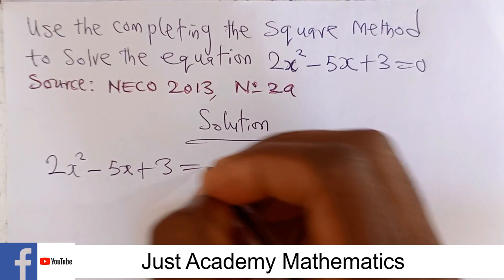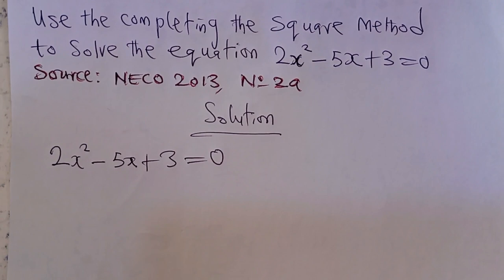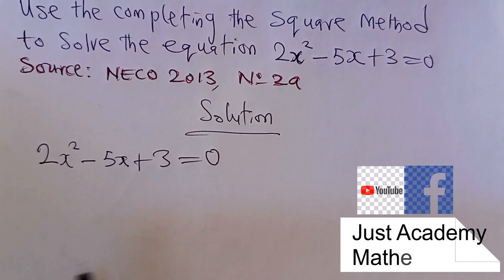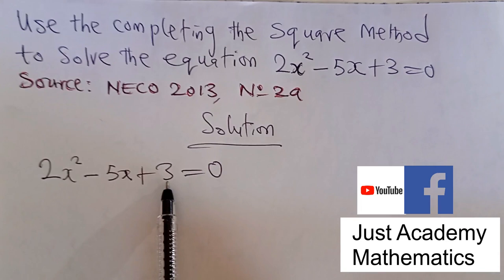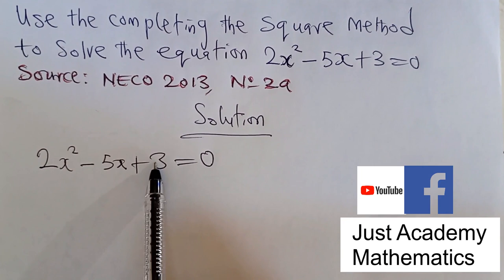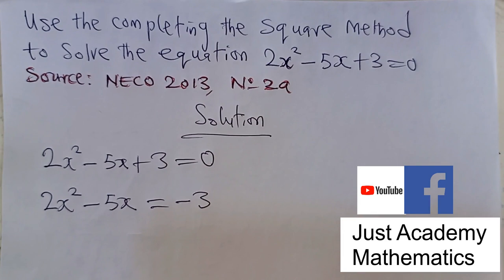We start by writing out the equation again: 2x² - 5x + 3 = 0. Completing the square method has a couple of steps. The first step is to move the constant — the term with no variable attached — to the other side. So we have 2x² - 5x = -3.